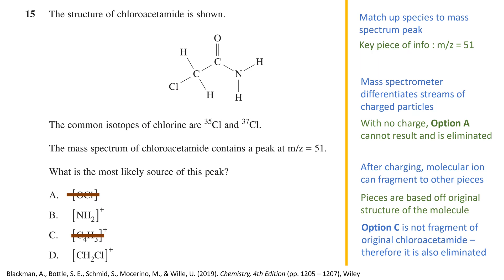We can now determine the atomic mass of the two remaining options. In option B, with nitrogen and two hydrogens, the total mass to charge ratio would be 16 — much lower than 51. This eliminates option B. For option D, with a carbon, two hydrogens, and a chlorine, the mass to charge ratio would be 49 or 51 depending on the chlorine isotope. This fits the 51 we are looking for, confirming that option D is our answer.